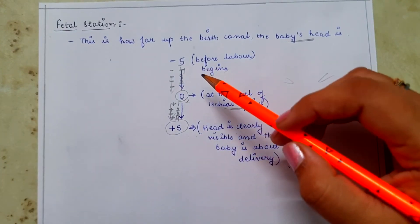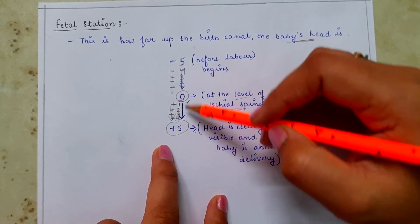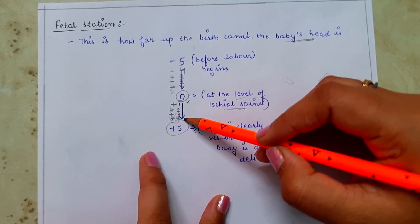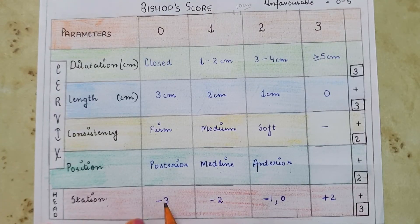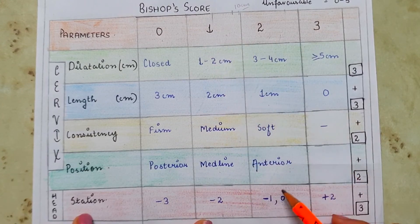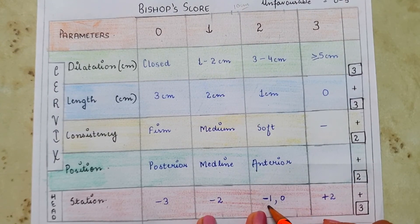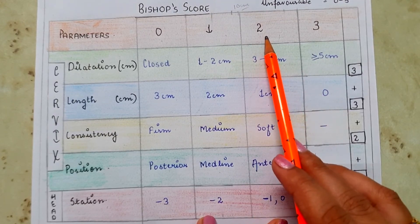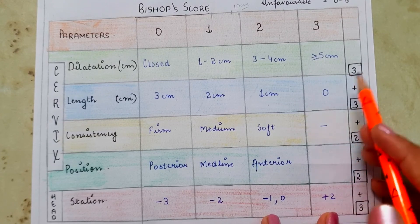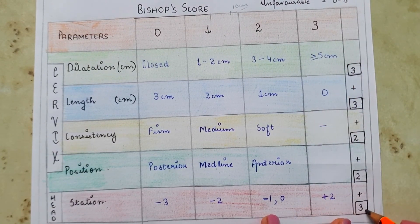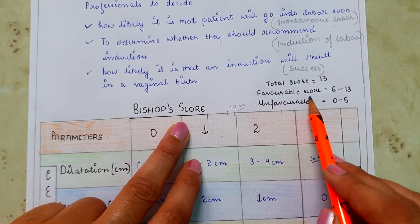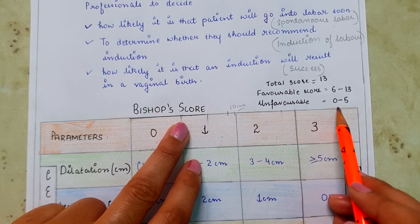Between minus 5 and plus 5, stations are minus 4, minus 3, minus 2, minus 1, zero, then plus 1, plus 2, plus 3, plus 4. When the station is minus 3, give score 0; minus 2 gives score 1; with further descent to plus 2, give score 3. The total score for station is 3, making the overall maximum Bishop's Score 13. A favorable score is 6 to 13; unfavorable is 0 to 5.